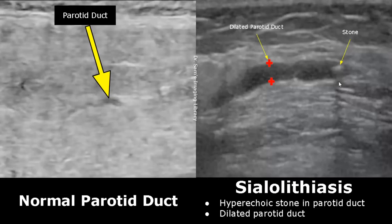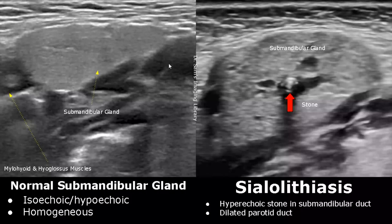Stones are a common cause of dilated parotid ducts. Here is a case of a stone within a submandibular gland duct. We can see the hyperechoic stone with posterior acoustic shadowing.